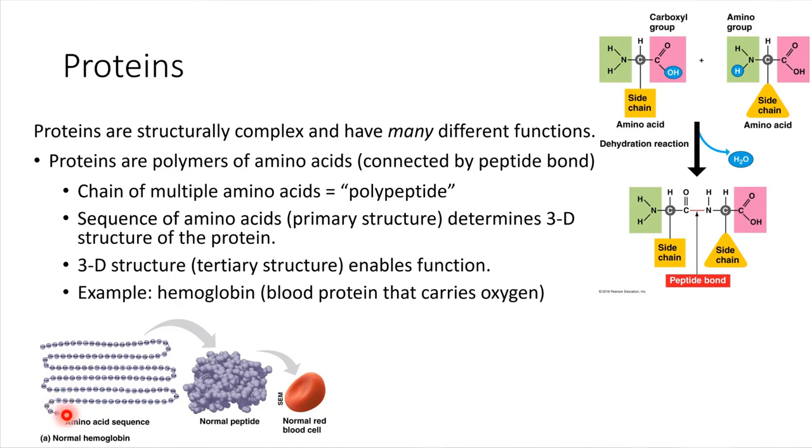All right, so once this chain is produced, it will fold into some sort of a three-dimensional shape. That's what this is showing, and that folding is due to attractions and repulsions between nearby amino acids. Okay, so three-dimensional shape, that's the tertiary structure. This tertiary structure happens to be really good at holding on to oxygen. Okay, so this is a protein that exists in normal red blood cells, and red blood cells are able to carry oxygen because of this.